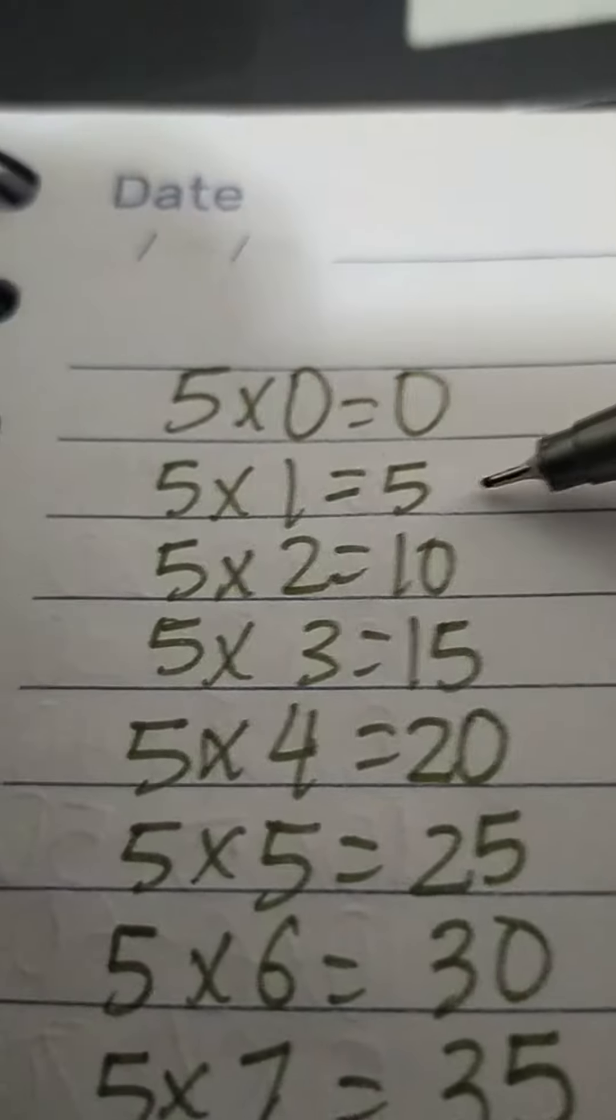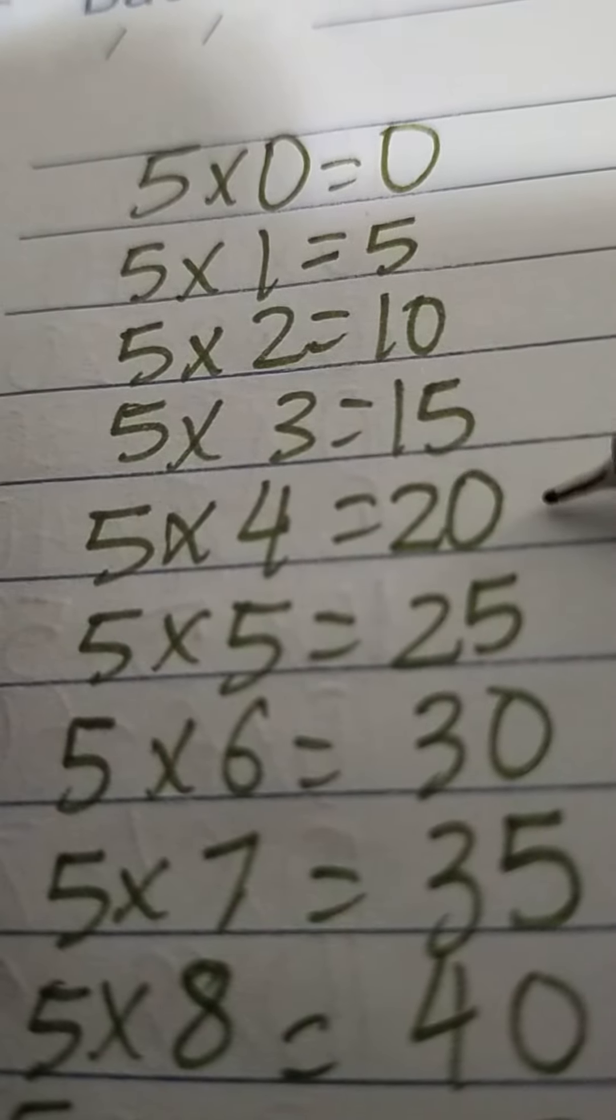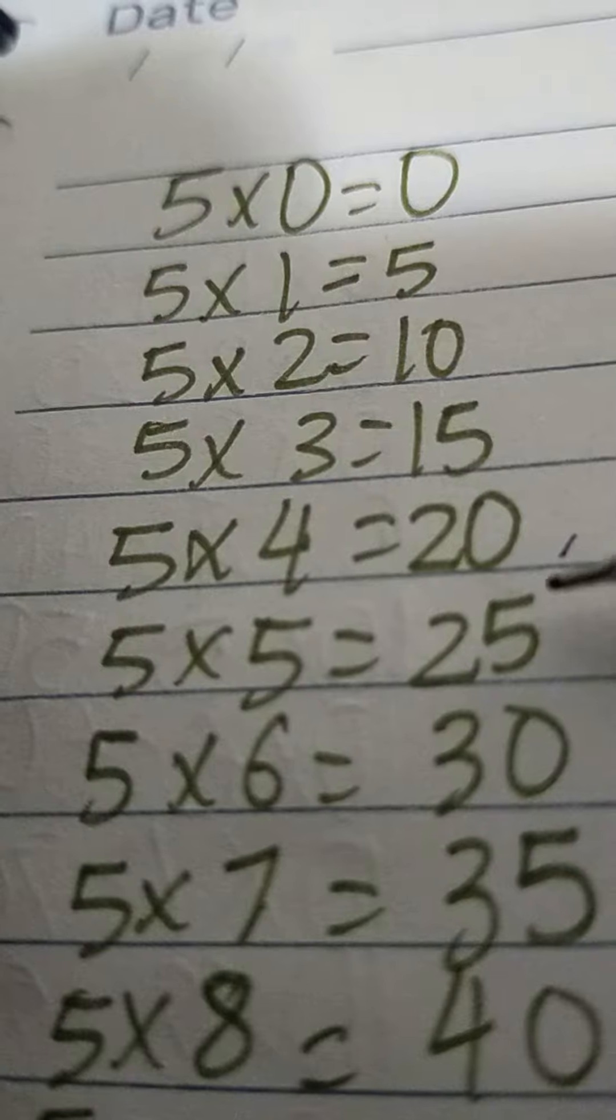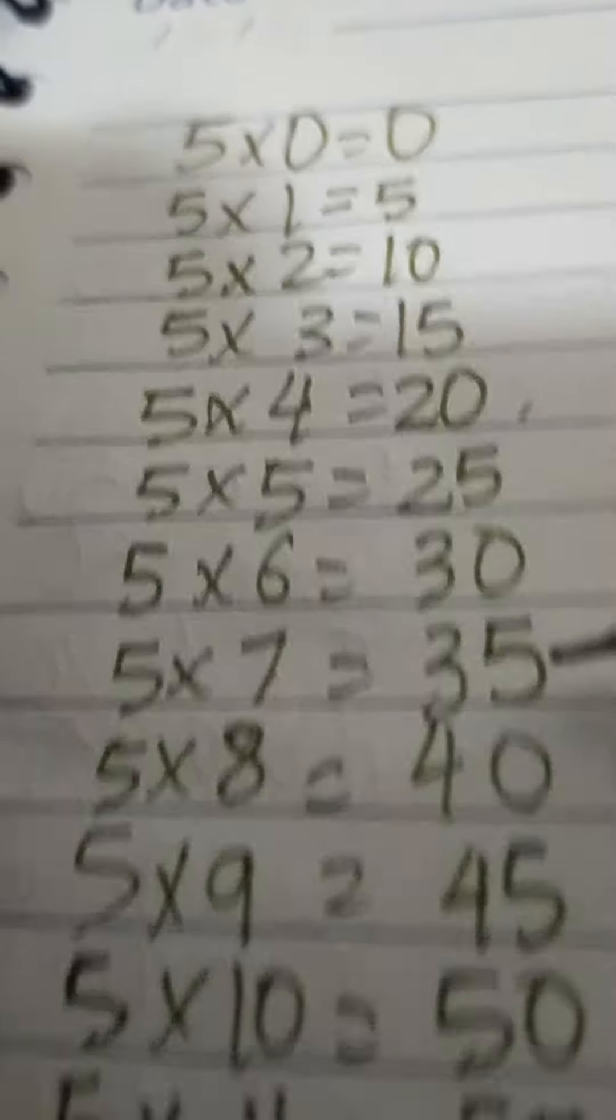Five times zero is zero. Five times one is five. Five times two is ten. Five times three, fifteen. Five times four, twenty. Five times five, twenty-five. Five times six, thirty. Five times seven, thirty-five.